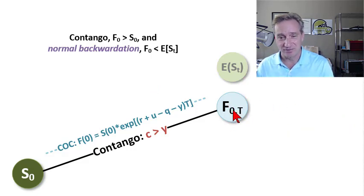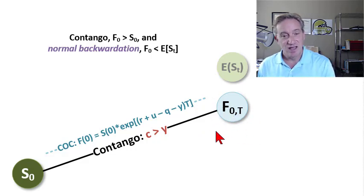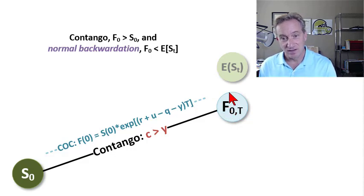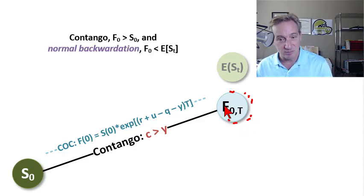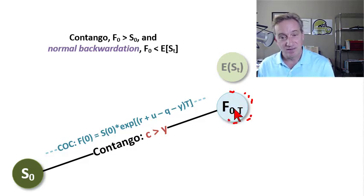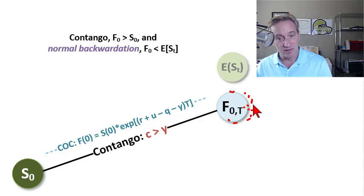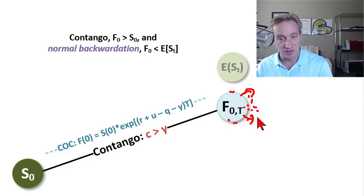The cost of carry gives us a theoretical futures price, but in practice that doesn't mean we're surprised if the traded futures price is not identical. The traded futures price can be a little bit different — arbitrage will keep it pretty close, but there are technical or market factors such as supply, demand, and liquidity that allow it to trade rich or trade cheap relative to our theoretical value.